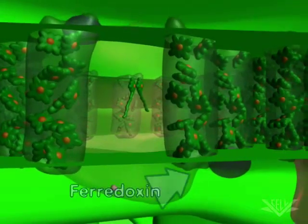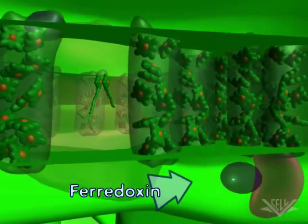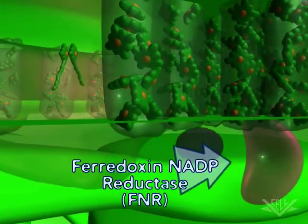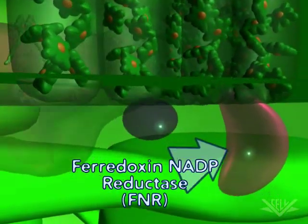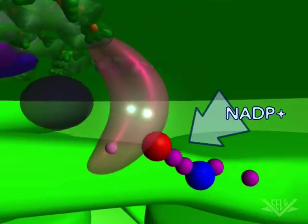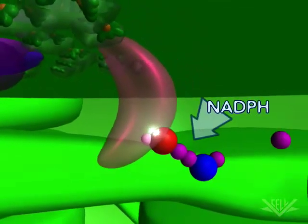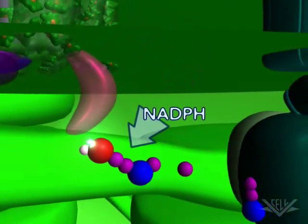Ferredoxin then transfers the electrons to the ferredoxin NADP reductase, also known as FNR. After two electrons are transferred to FNR, NADPH is made by adding the two electrons and a hydrogen ion to NADP.